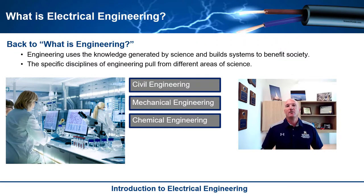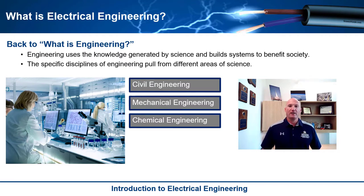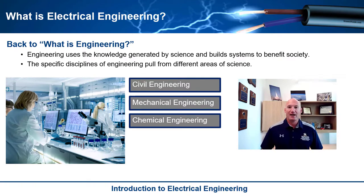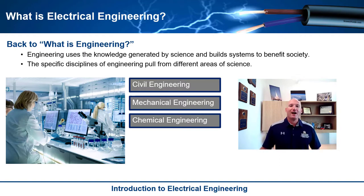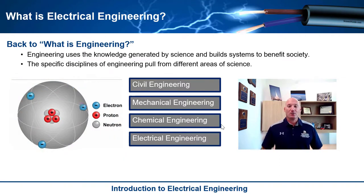Chemical engineering looks at chemical reactions — it draws from the field of chemistry and tries to figure out how we can exploit those reactions to provide energy to society. It started mainly with petroleum engineering, looking at how to take oil out of the ground and refine it into gasoline, but it has evolved into a broader field involving biological reactions, alternative energy sources, and pharmaceutical design.